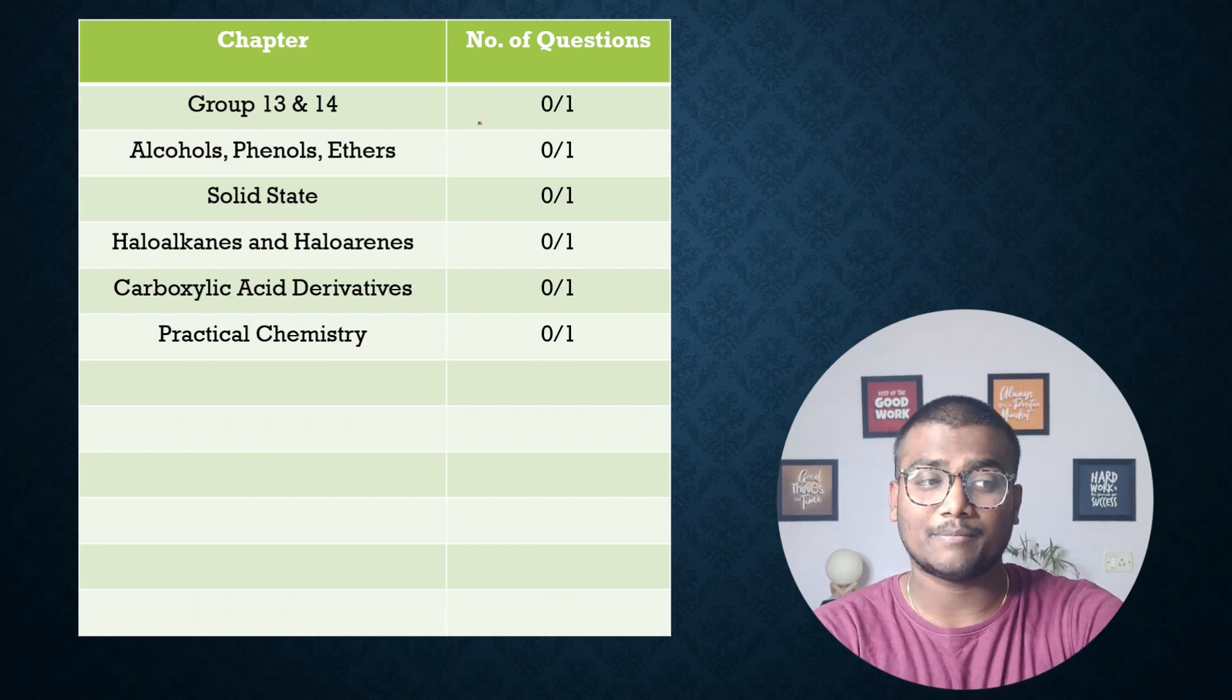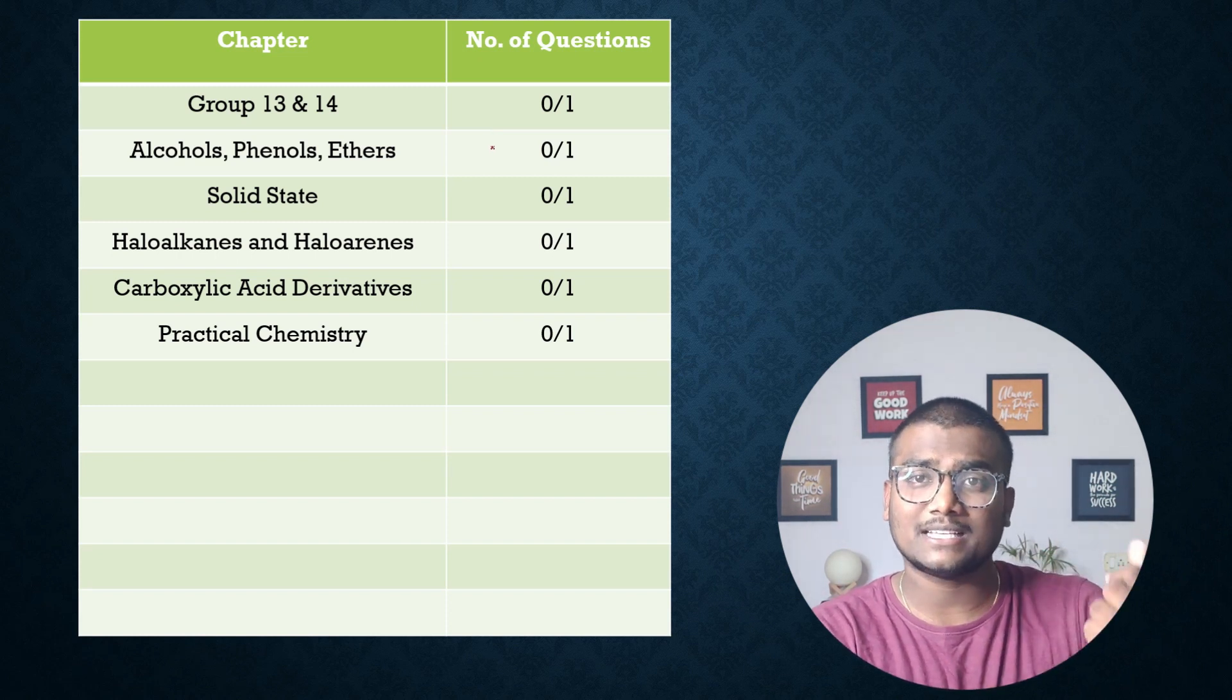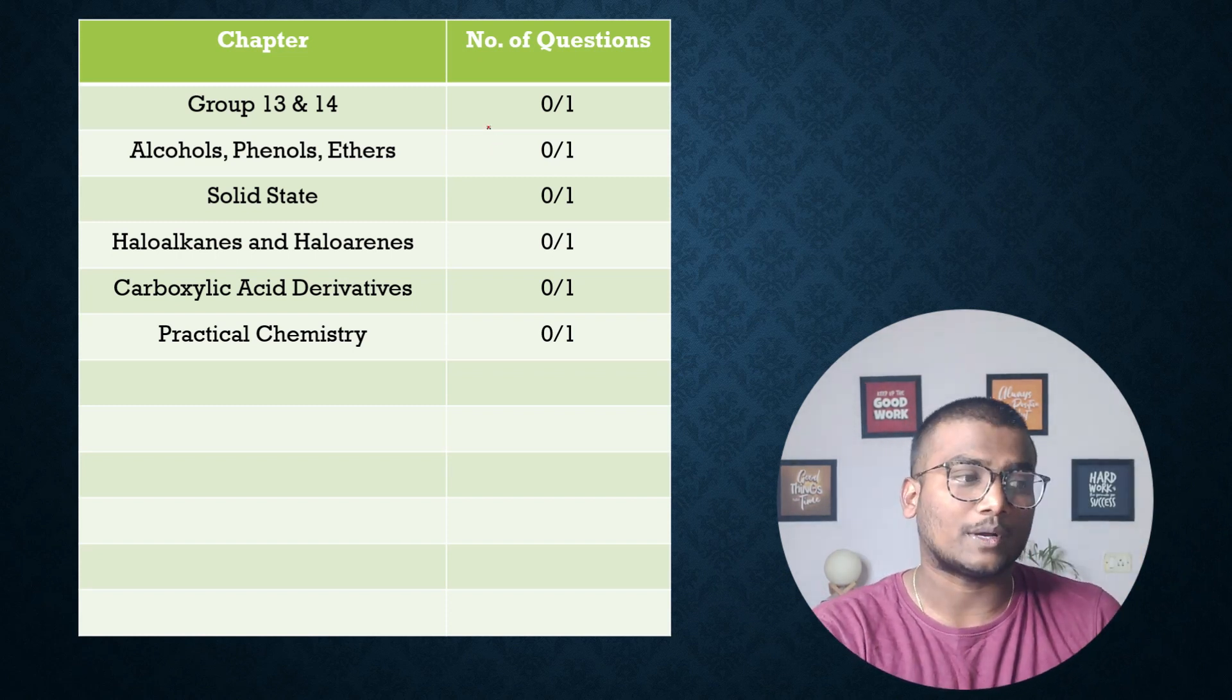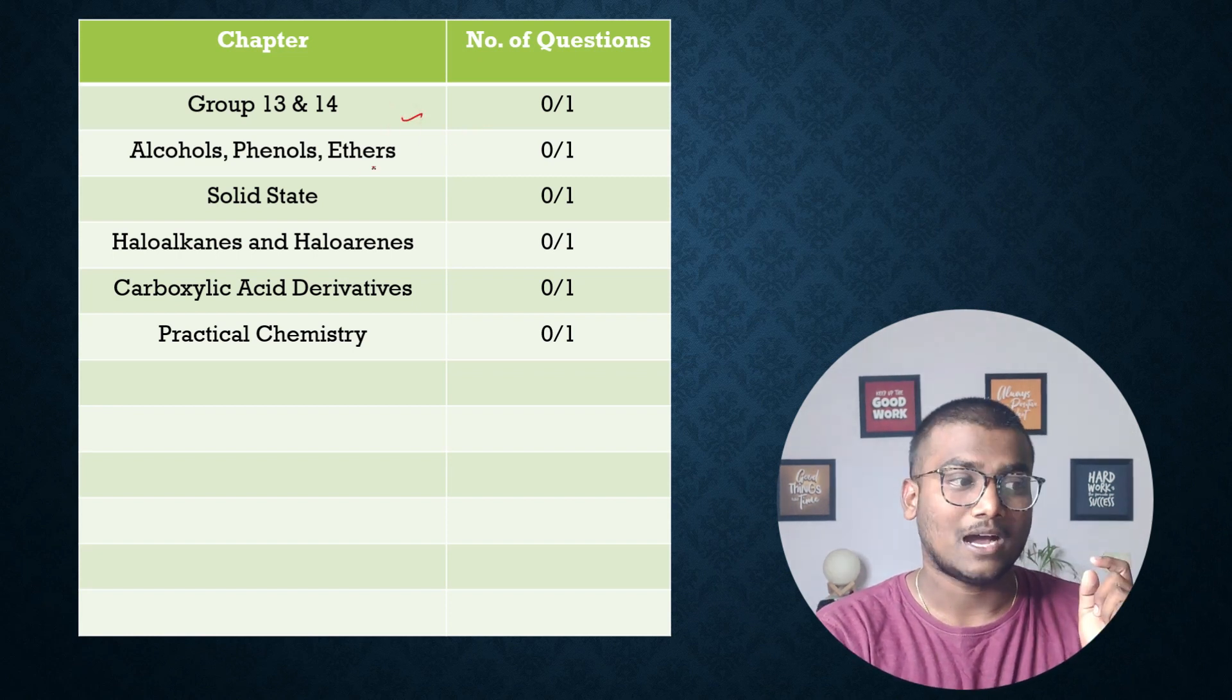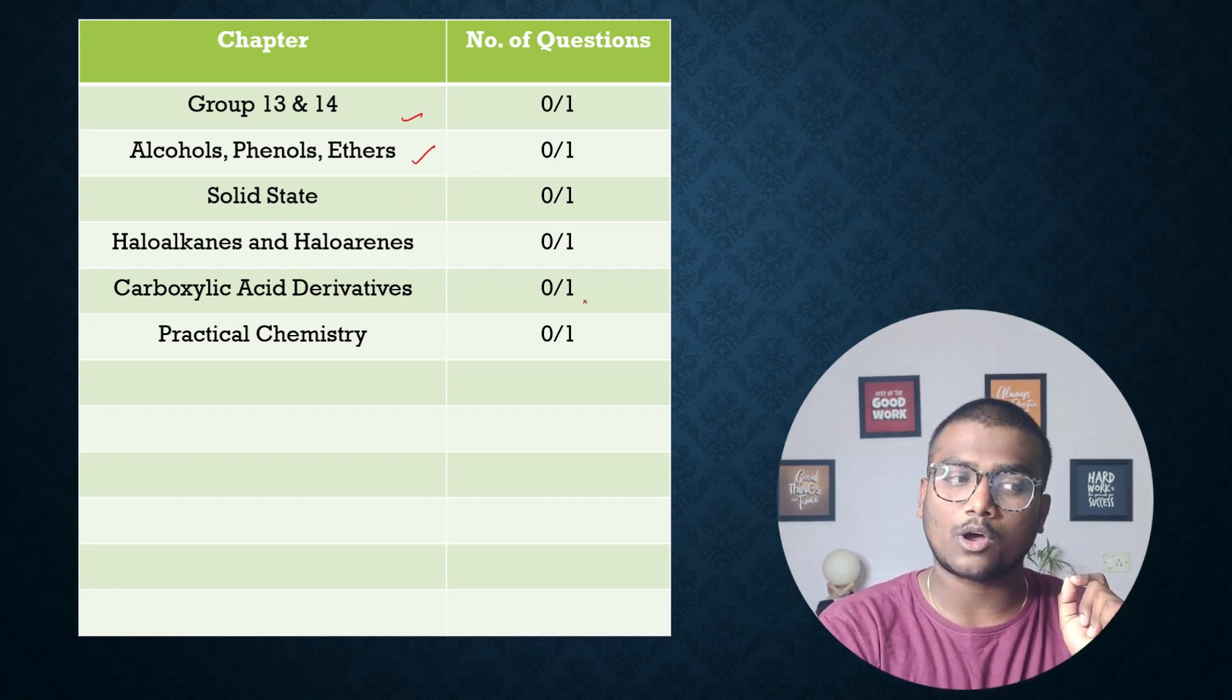Now these are the topics where majority chances you will not get any question from these, but there might be cases you might get one question. Group 13 and 14, alcohols, phenols, ethers, zero or one. Solid state, zero or one. Haloalkanes and haloarenes, zero or one. Carboxylic acid derivatives, zero or one. Practical chemistry, zero or one.